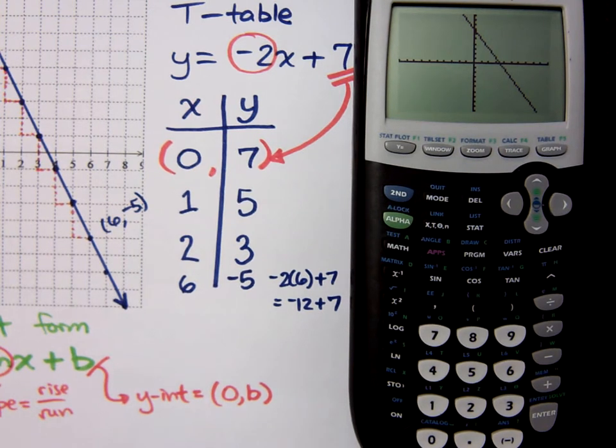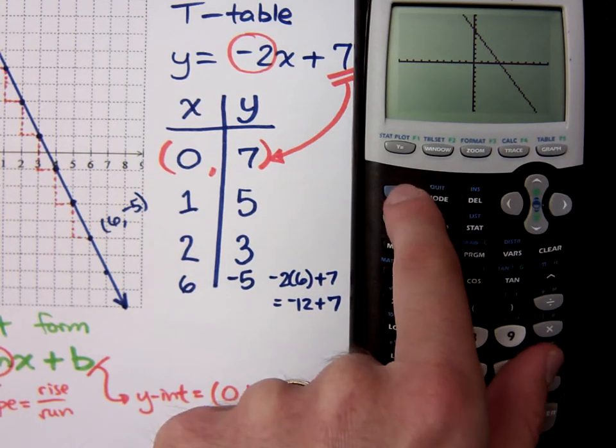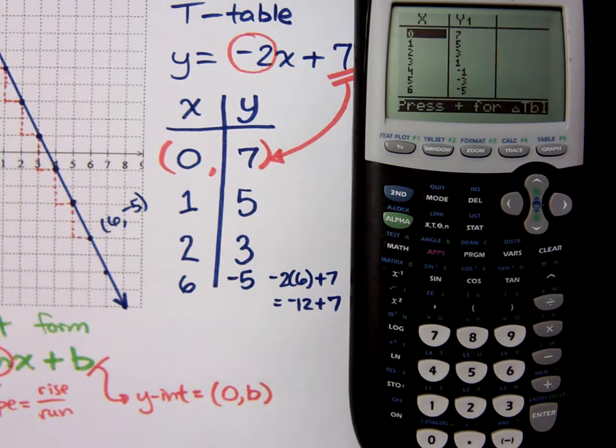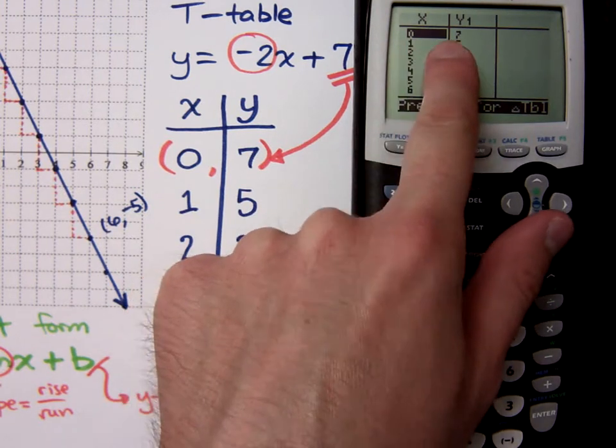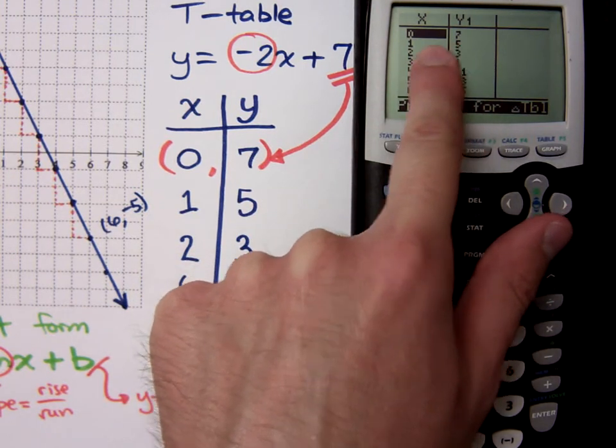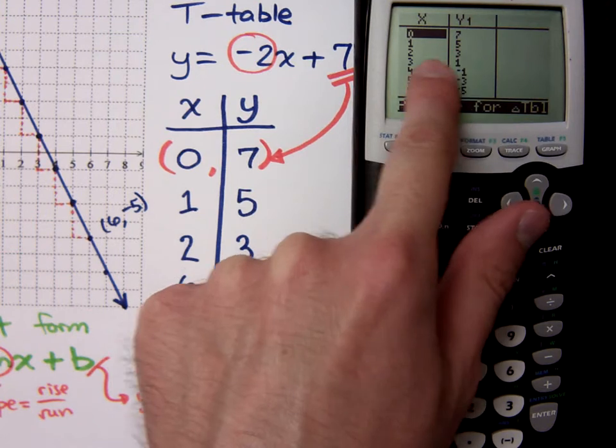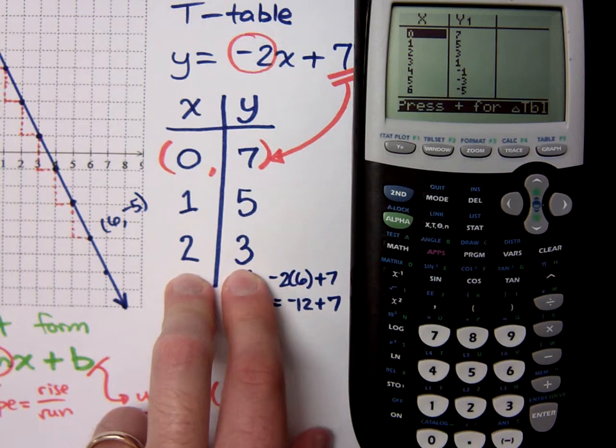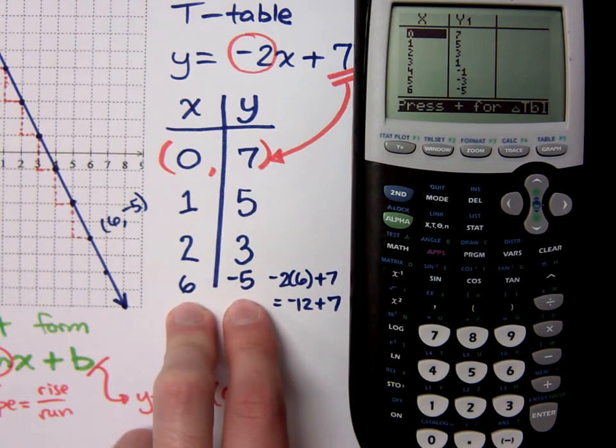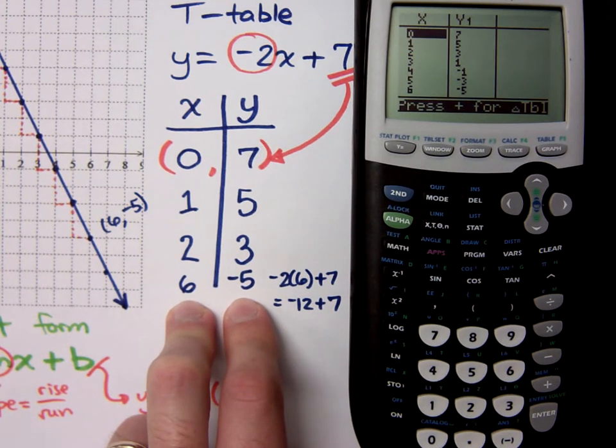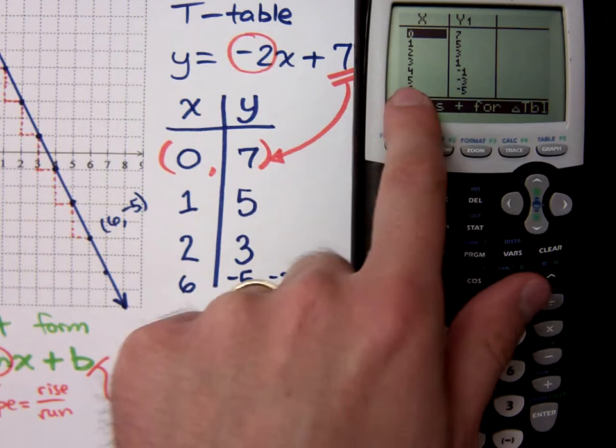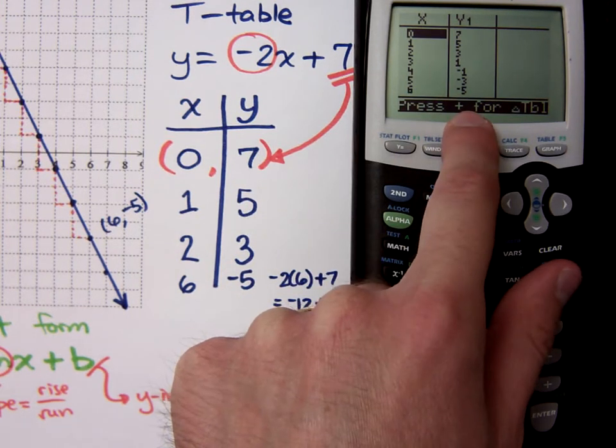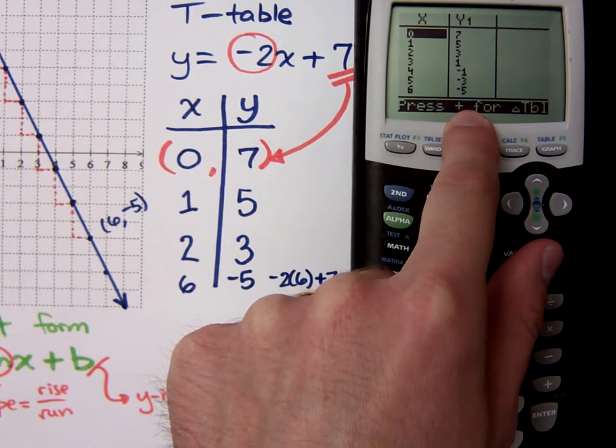Now, one of the neat things that you can do here is that you can go to your table by pressing 2nd, graph. And under the table, it has this T-table already created for you. When X is 0, Y is 7. I knew that. When X is 1, Y is 5. When X is 2, Y is 3. Those were the first three values that I had here in my T-table. And the last guy I did was 6, negative 5. That shows up there as well. What do you guys think about that?